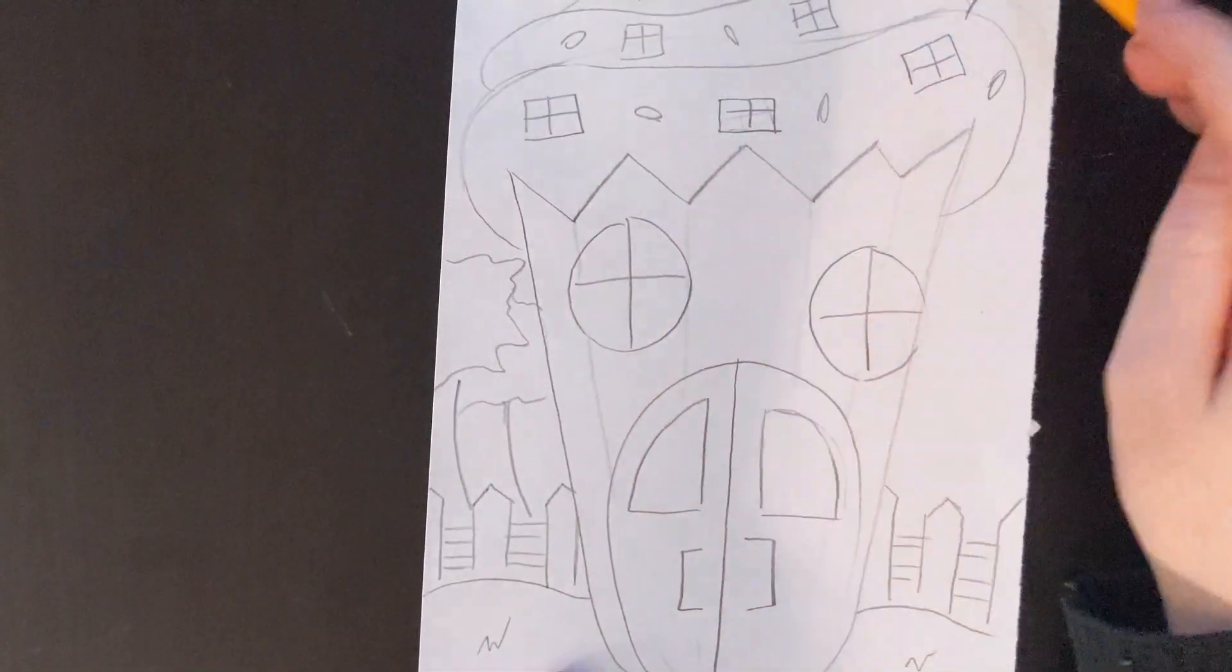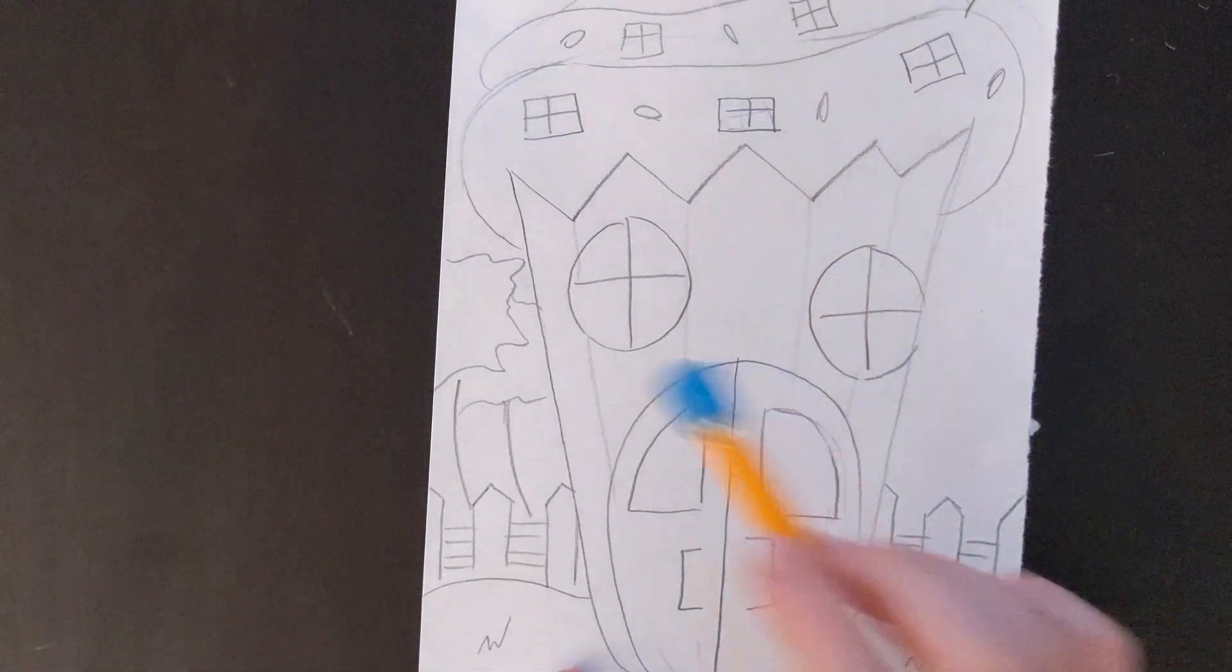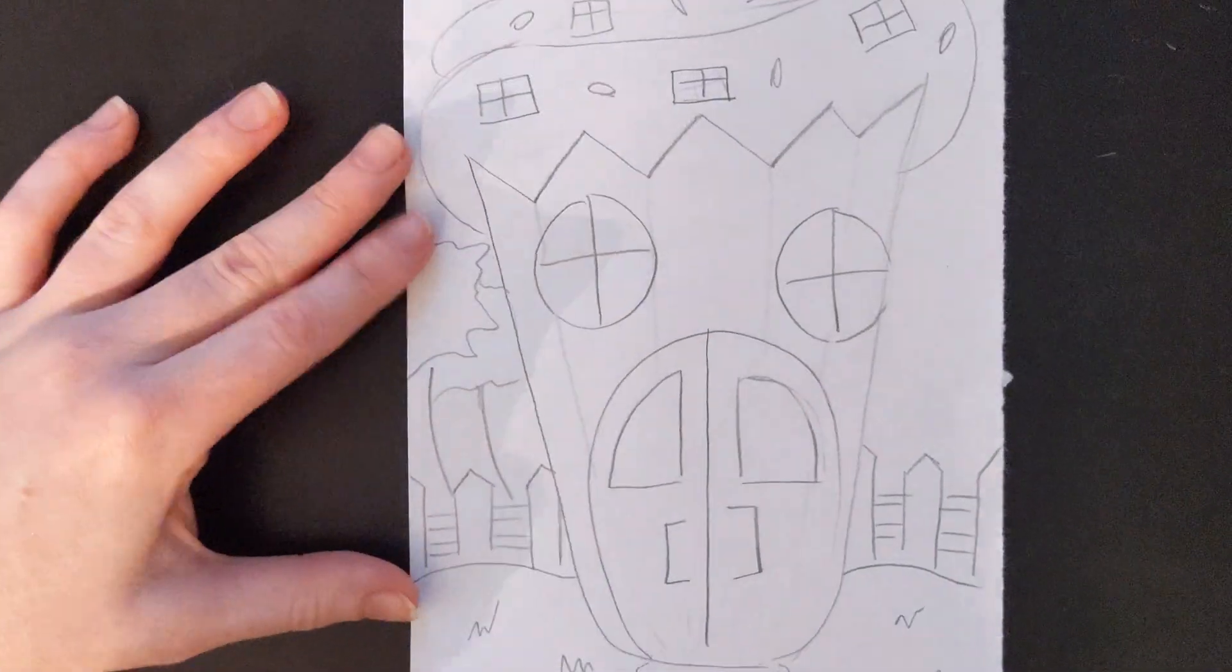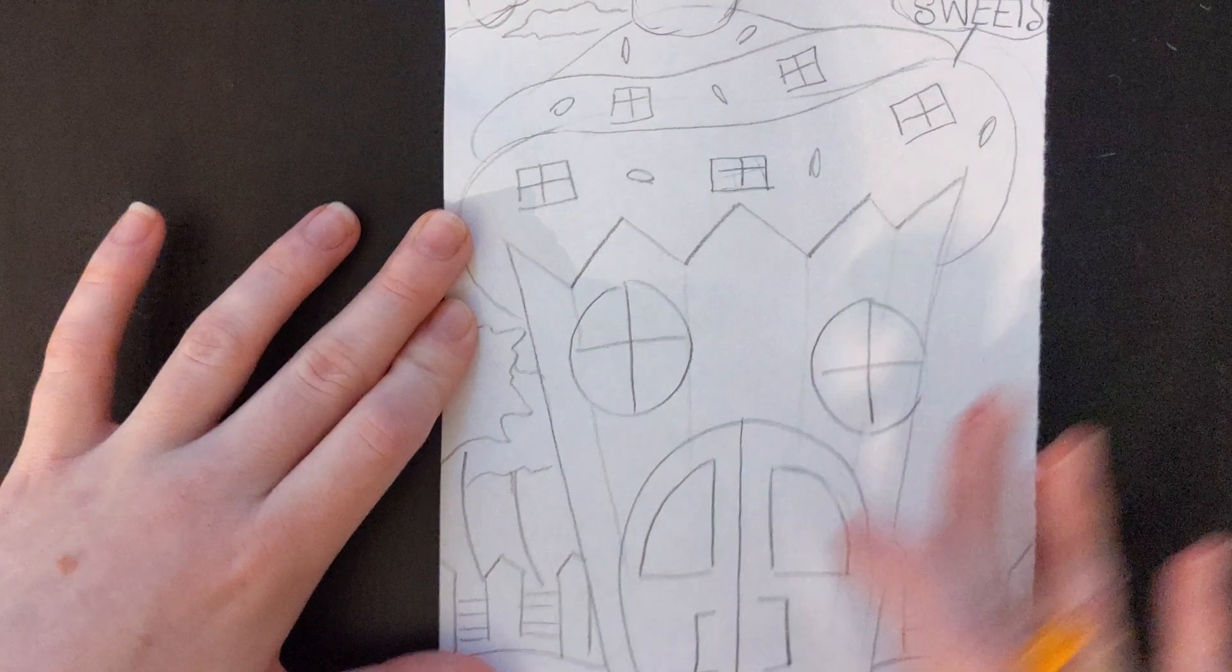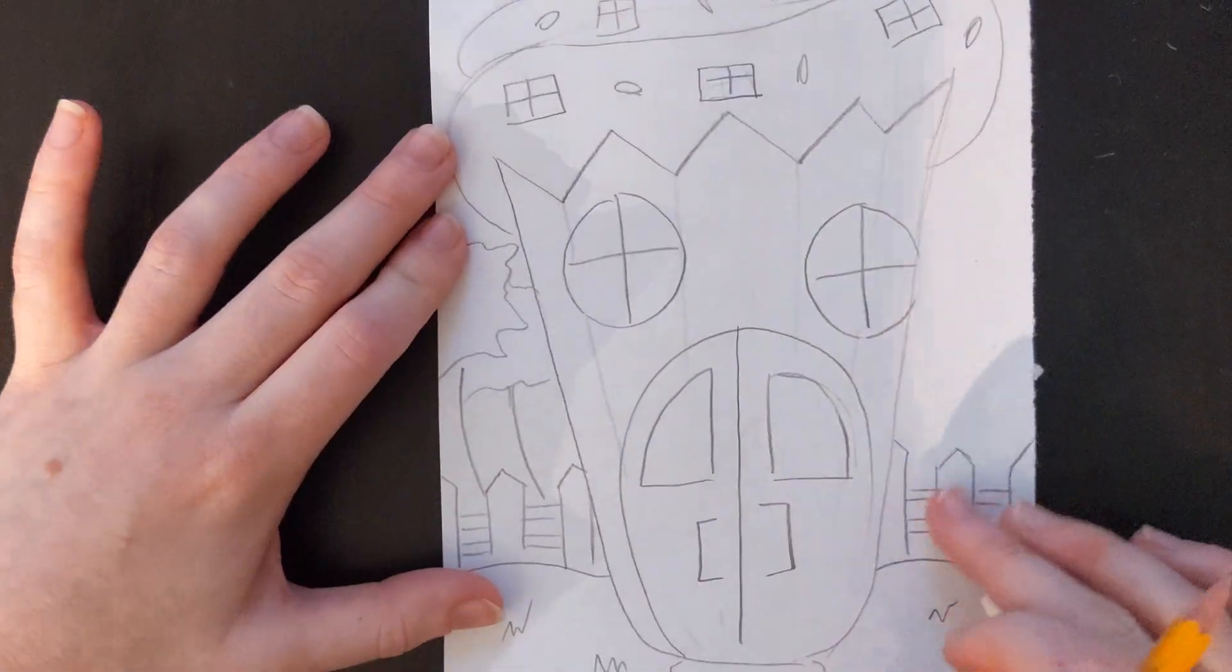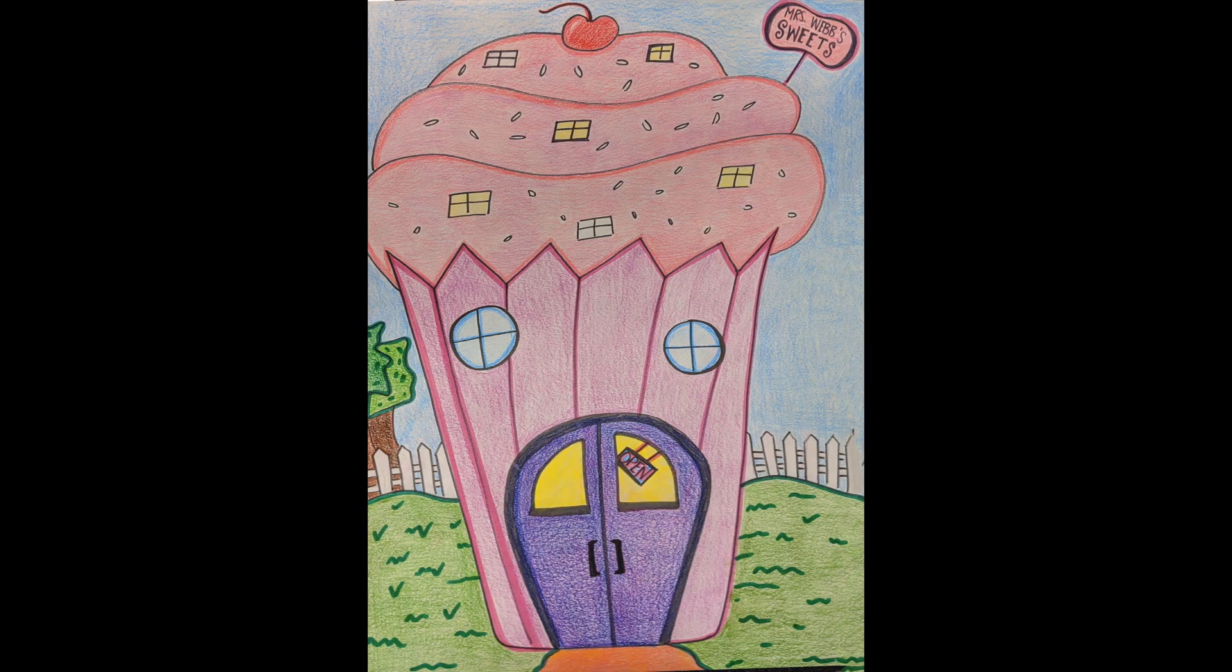I have my building. I have my sign, a door, windows, details to show that it's a cupcake. I have a fence. I have some trees in the background to show the location. I have a path that goes to my building.